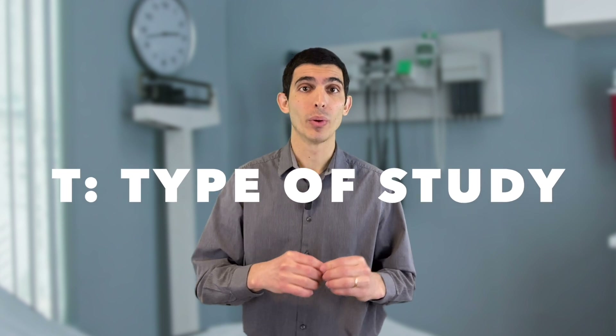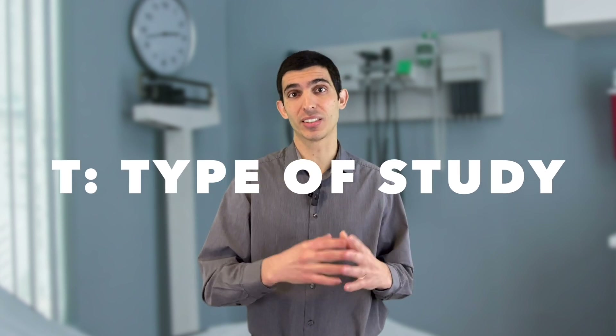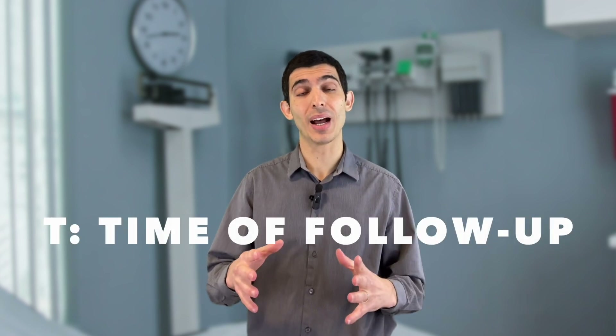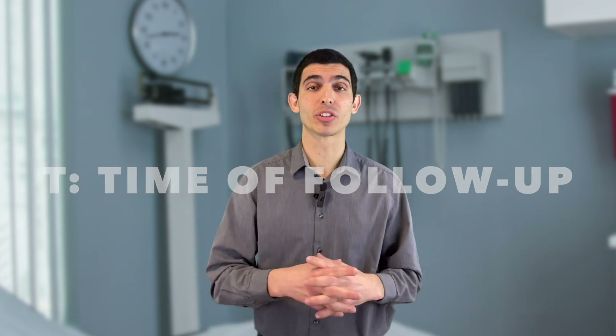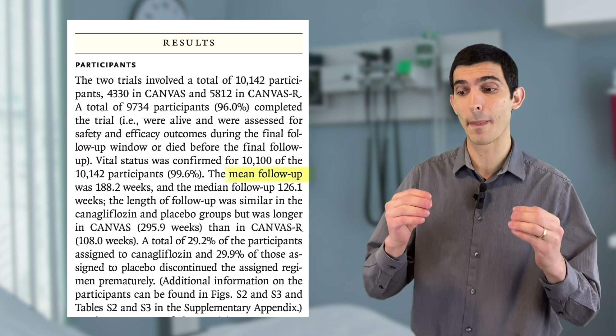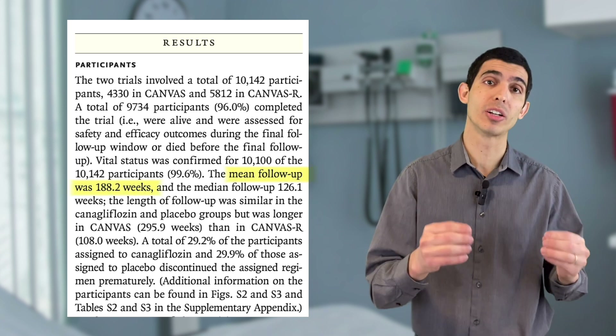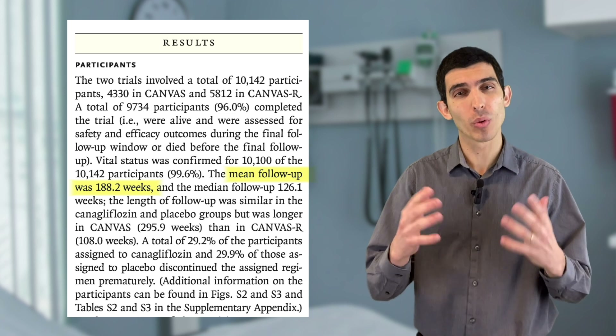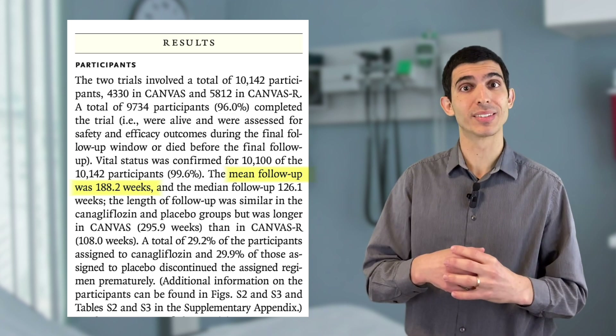Next we go to the two T's. PECON has two T's at the end. One T is for type of study — which in this case is straightforward: it's a randomized controlled trial. The second T is for follow-up time. In the Canvas trial, patients were followed for a mean of 188 weeks, or roughly 3.6 years.